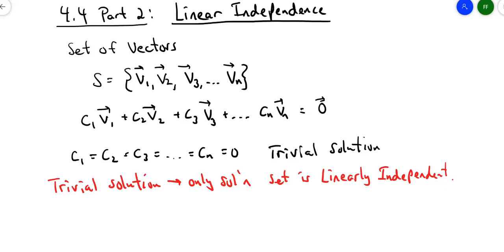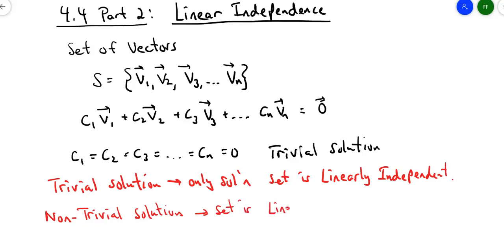On the other hand, if there are non-trivial solutions — like C₁ equals 3, C₂ equals 5, C₃ equals 4 — those would be considered non-trivial solutions. It could be that one of those Cₙ's is zero, but they can't all be zero. So a non-trivial solution means that the set is linearly dependent. If at least one of the vectors in that set is a linear combination of another, then they're linearly dependent.